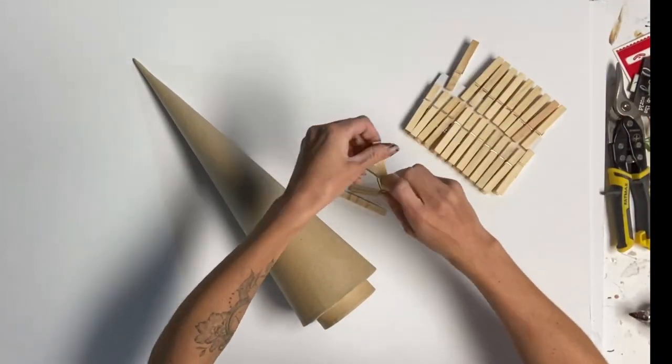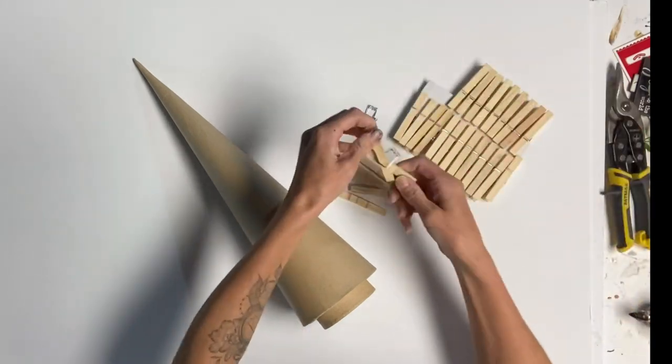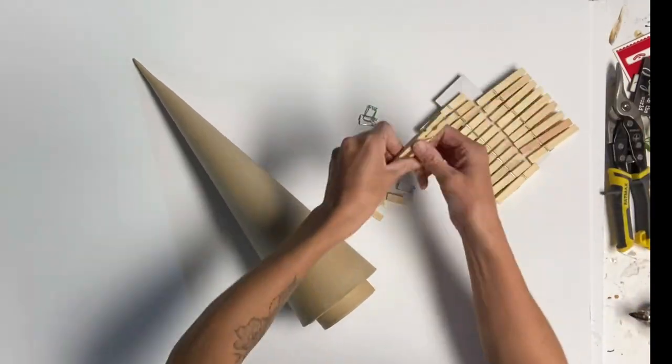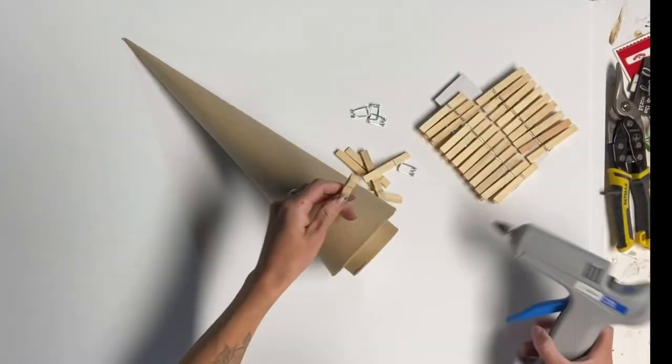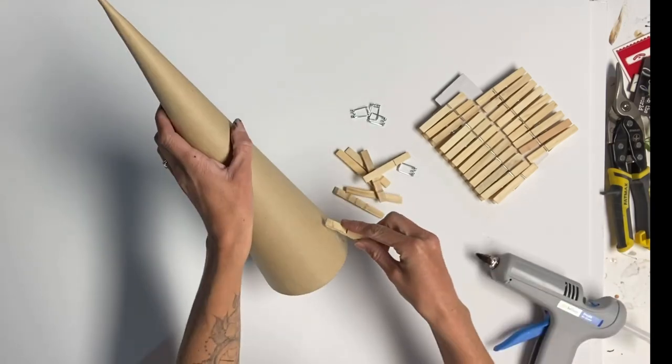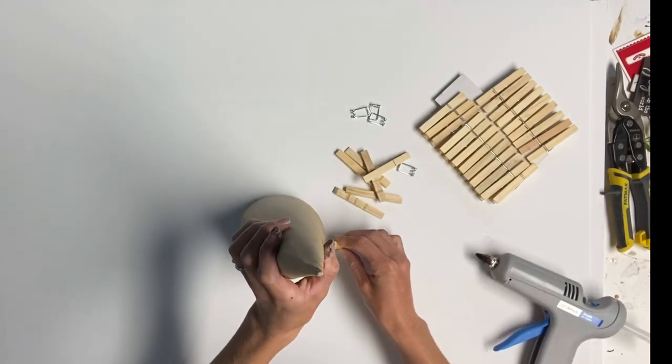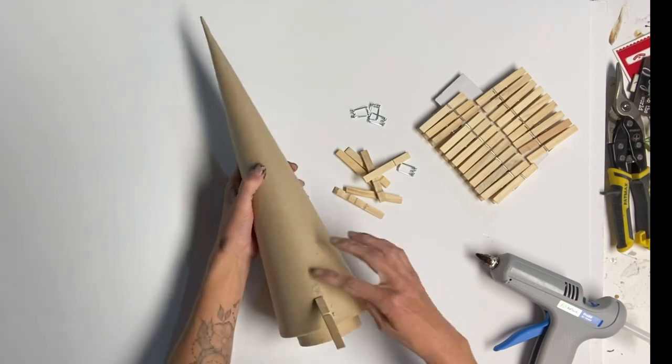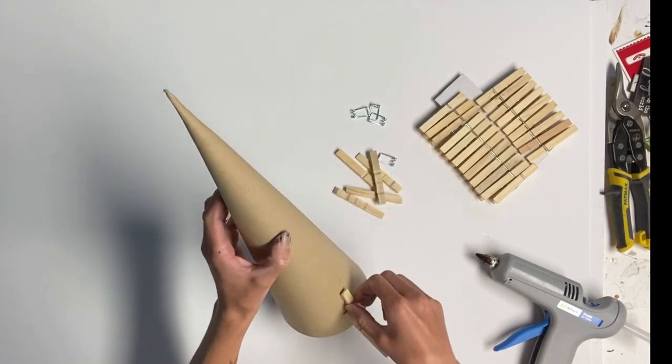And then I'm going to take my clothespins. I get these right from the Dollar Tree. I believe it's a pack of 100. And I'm just going to take them apart by removing the metal holder that holds the two sides together.